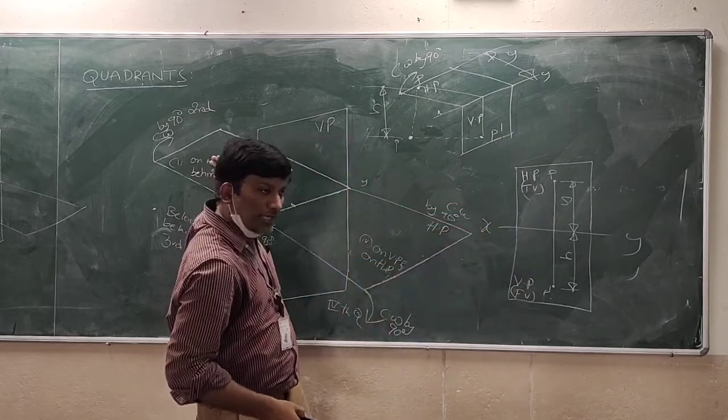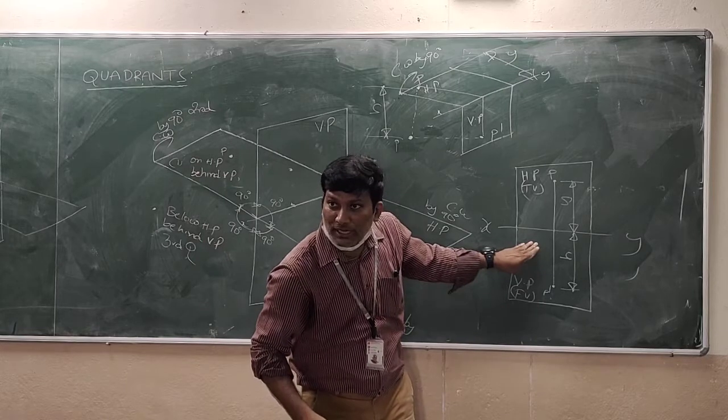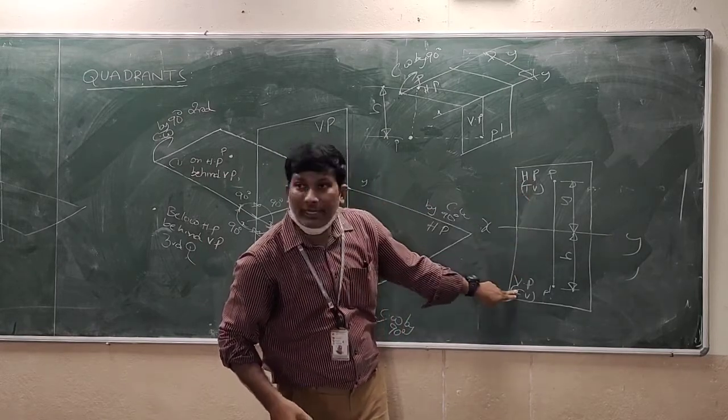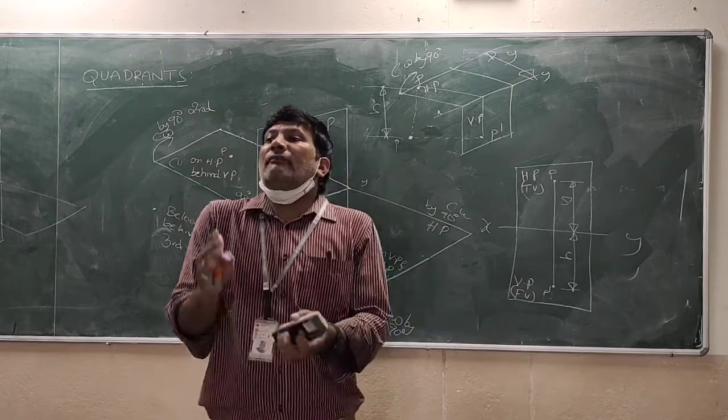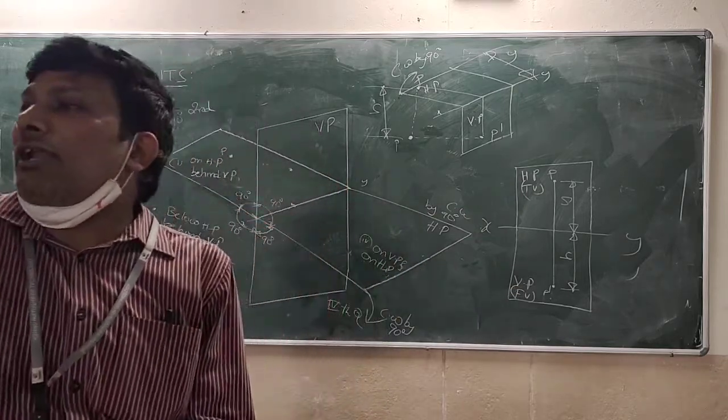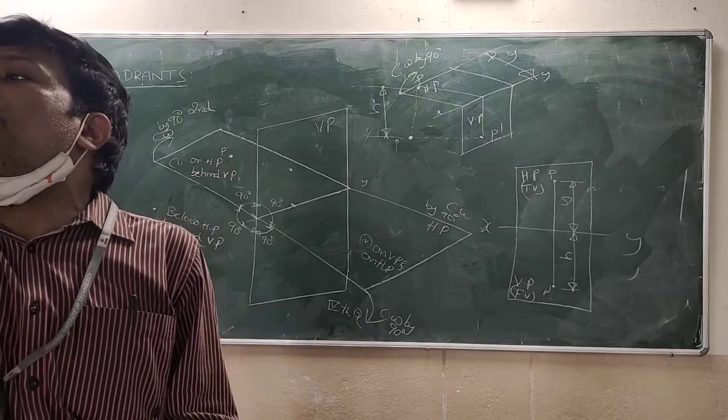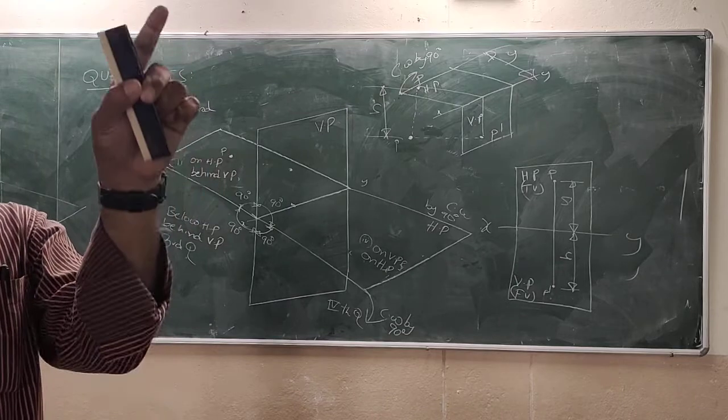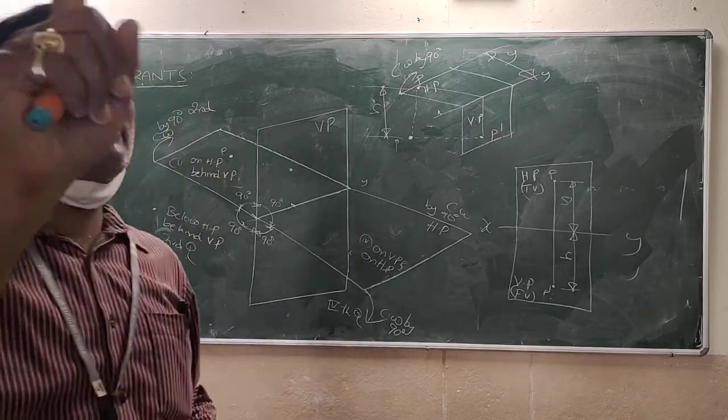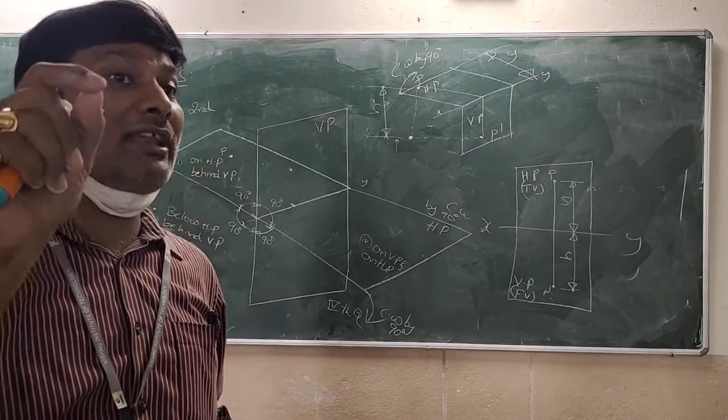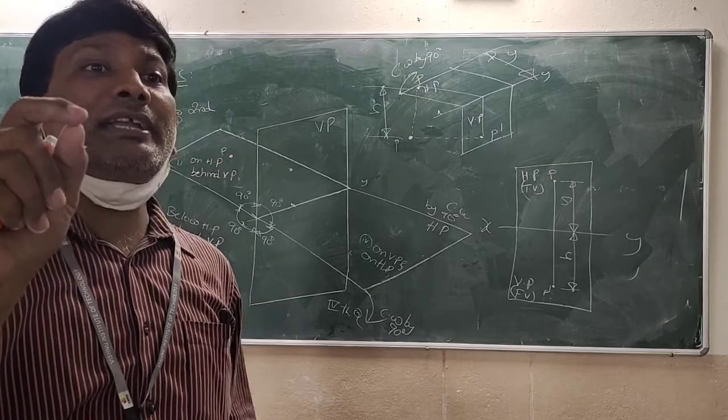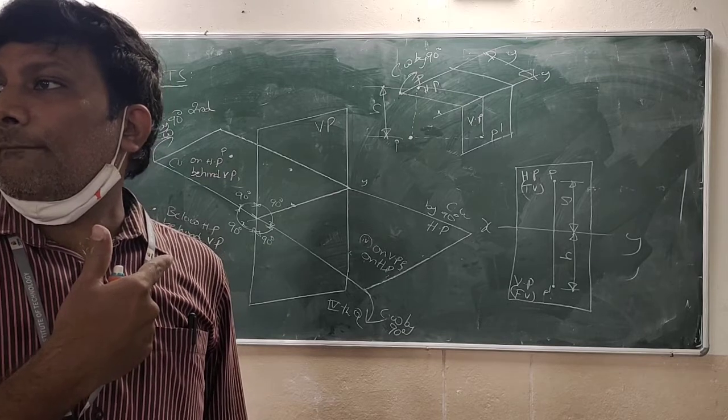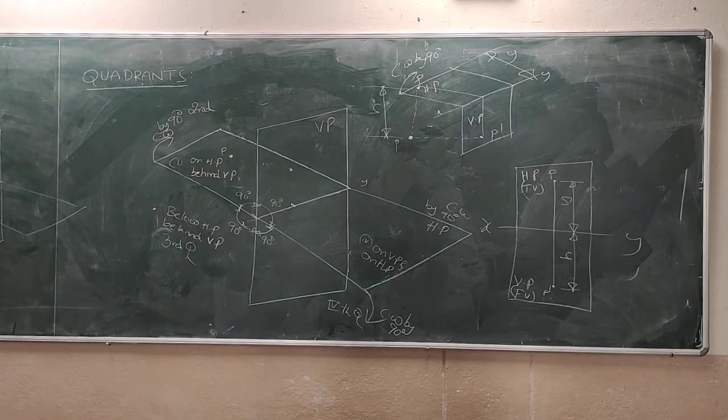But in case of the third quadrant, this is your vertical plane and this is your horizontal plane. Here you will get top view, here you will get front view. It means when you are comparing quadrant one with quadrant three, they are quite opposite with each other. This is very important - this is the key difference between the first quadrant and the third quadrant. I think it will be very clear. Thank you.